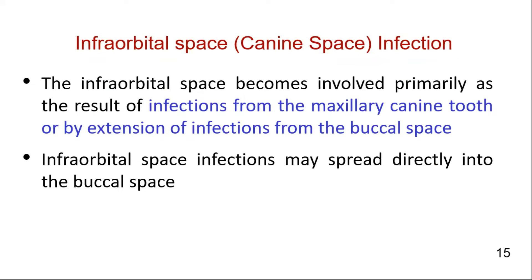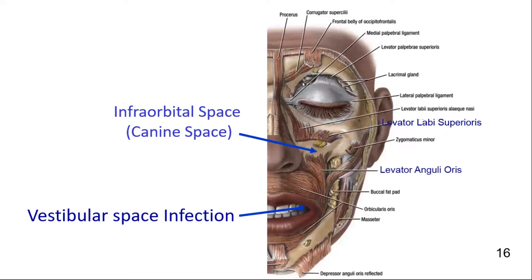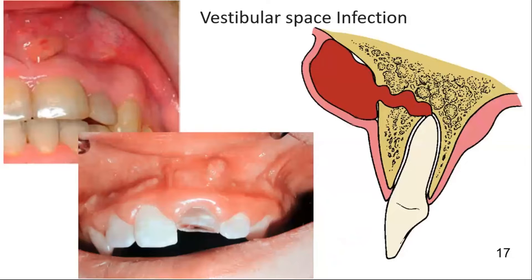The infraorbital or canine space infection is affected most by infections arising from the particularly long root of the maxillary canine tooth. This space may become infected by extension from the adjacent buccal space infection, and infraorbital space infection may spread directly into the buccal space as described through the flowchart. The space inferior to the canine space, that is caudal to the levator anguli oris muscle, is the vestibule. Below the levator anguli oris muscle inside the oral cavity is the vestibular space.